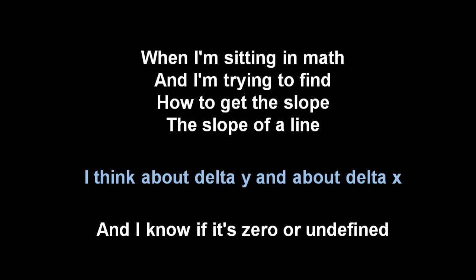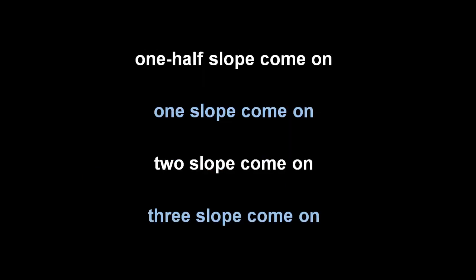When I'm sitting in math and I'm trying to find how to get the slope of a line, I think about delta y and about delta x. I know if it's zero or undefined. One half slope, come on, one slope, come on, two slope, come on, three slope, come on.